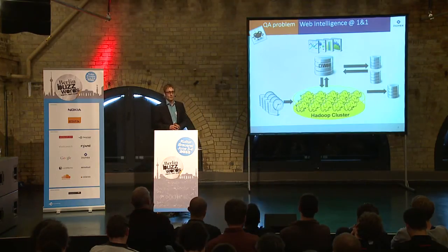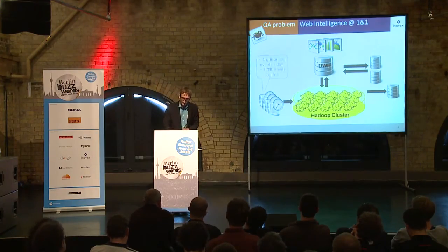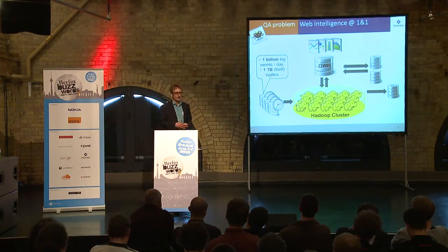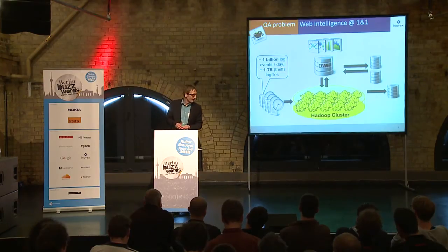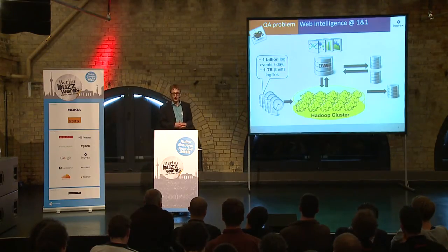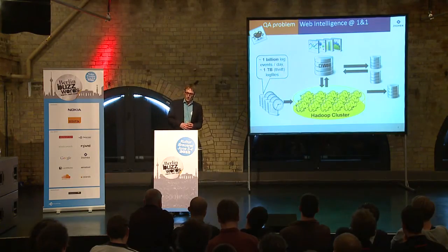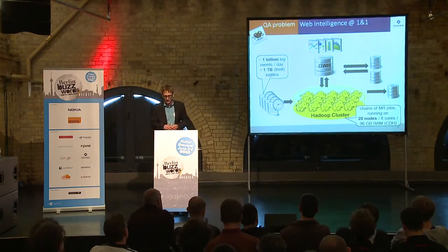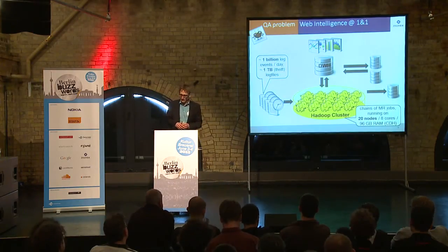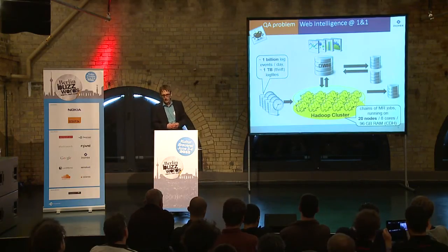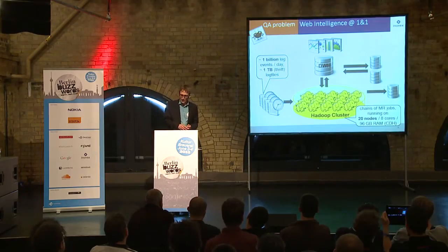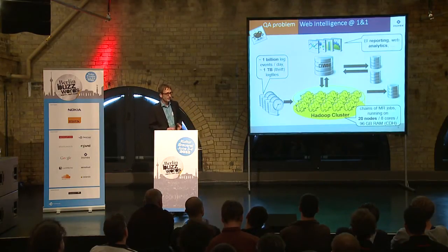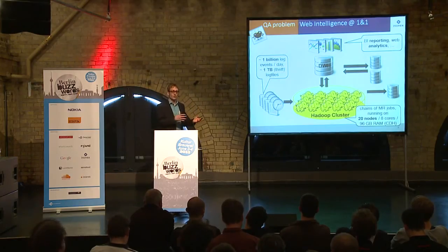At our project at 1&1, we did web intelligence. A core part of this was log mining. We worked on log data from an ad server producing roughly one billion log events per day, roughly one terabyte of raw data, processed in our Hadoop clusters using several chains of MapReduce jobs running on 20 nodes. Each node has eight cores and 96 gigabytes of RAM, and we're working on the CDH distribution of Hadoop. We fill a data warehouse with numbers used for BI reporting and web analytics.